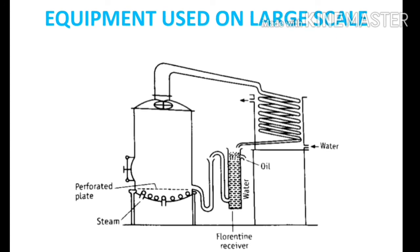Procedure for industrial scale: The material from which the volatile oil is to be separated is placed in the still above the perforated plate. Steam is admitted to the jacket of the still, heating the water and material inside until it starts to boil. Steam is also injected below the material through a steam pipe from the jacket. The steam carries the volatile oil into the condenser, and the distillate is collected into a Florentine receiver. The oil, which is lighter than water, is separated from the upper spout, and the water is returned to the still.